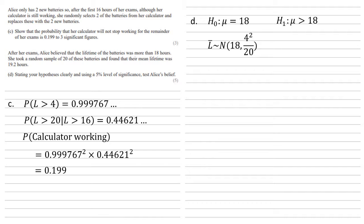The mean is still 18, but we're going to divide our variance by 20. So we've got 4 squared over 20. By square rooting this, this will give us a standard deviation of 4 over root 20, which is going to be the new value we use for the normal function on our calculator.